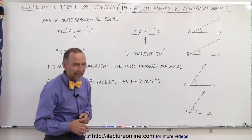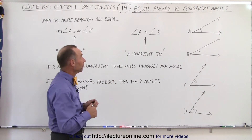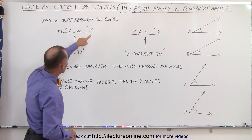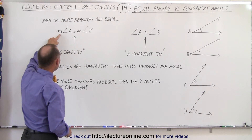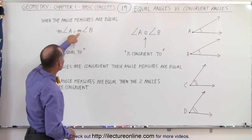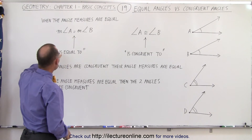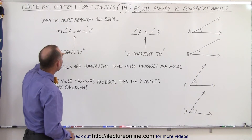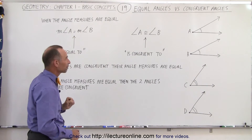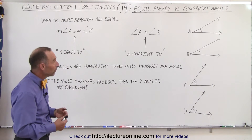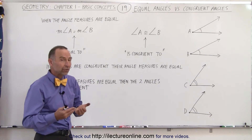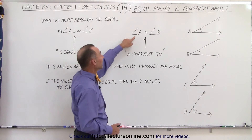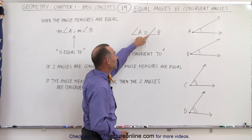So when do we say that the angles are congruent and when do we use the word equal? Well, when the angle measures are equal, we write: the measure of angle A is equal to the measure of angle B — we use the phrase "is equal to." When do we use congruent? When we simply compare the two angles, we understand that their angle measures are equal, but we simply write that angle A is congruent to angle B.